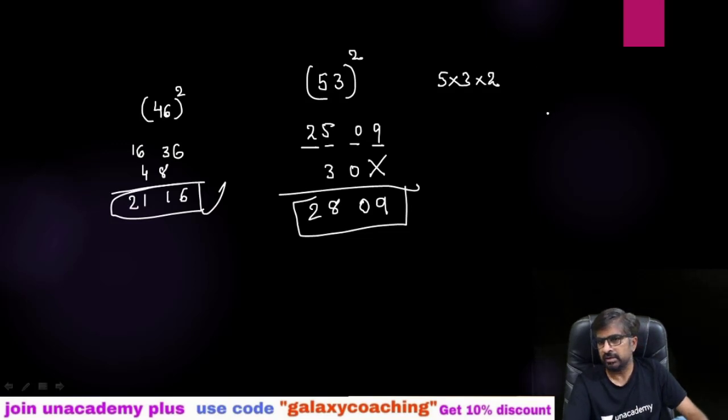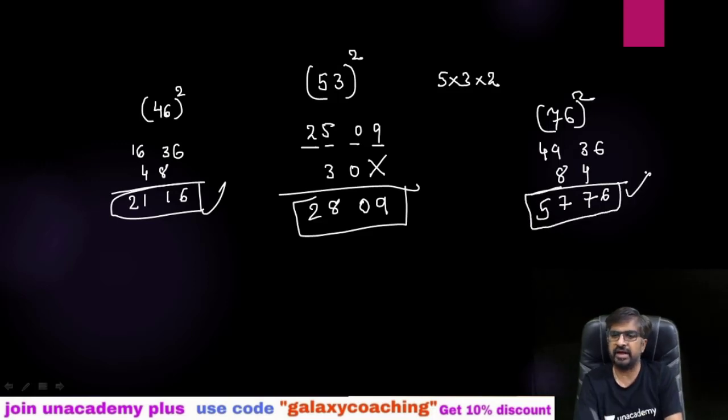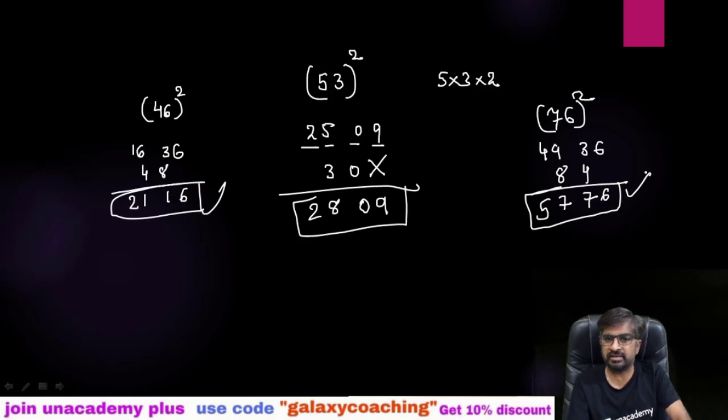Let me take 76 square. So 7 square 49, 6 square 36, 7 times 6 is 42, 42 times 2 is 84. Directly 5776, so square of 76 will be 5776. I want to show you in how many seconds I can find out, that's why I'm writing this so quickly. Very simple, just you need to follow.